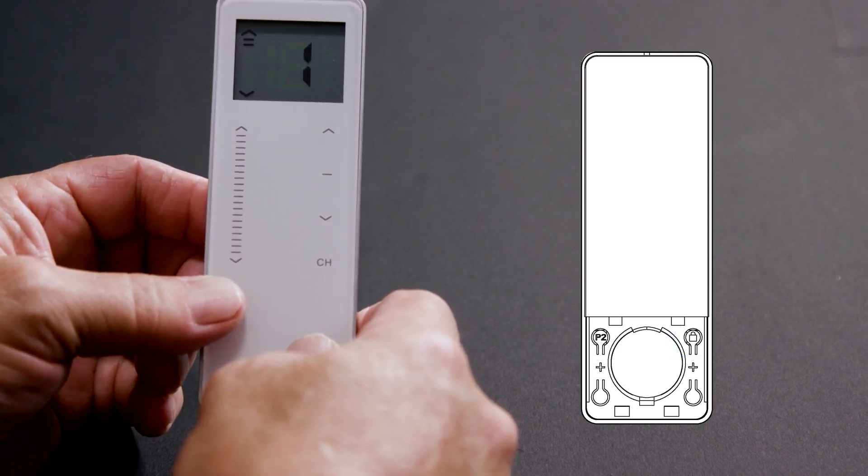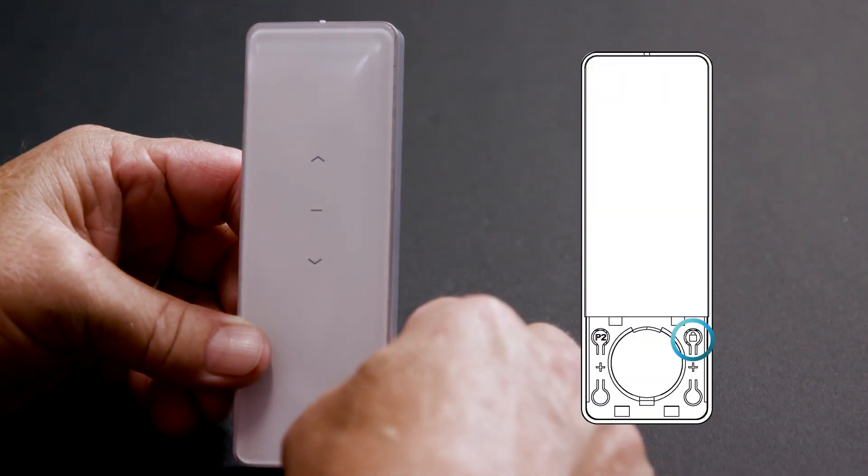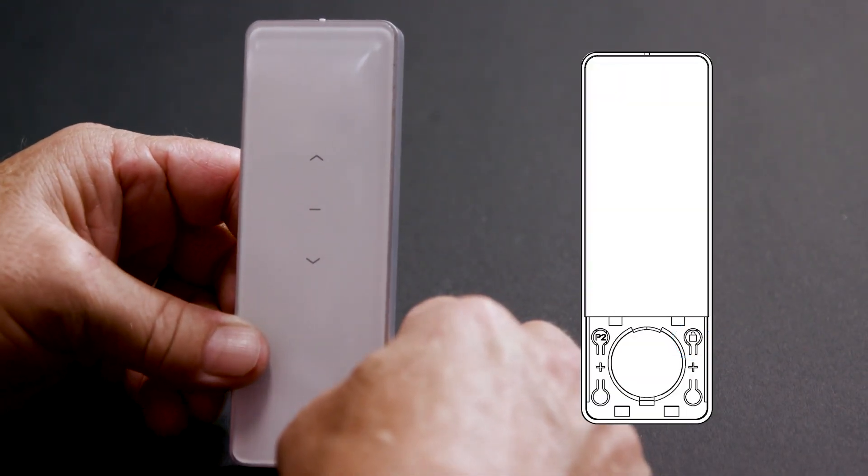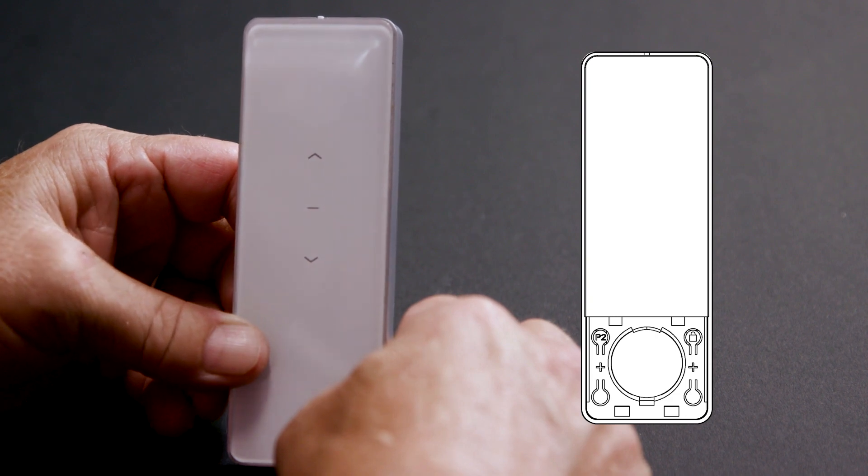To see if the remote is unlocked on a single channel remote, press the lock button. If the blue LED on the front flashes, the remote is unlocked.